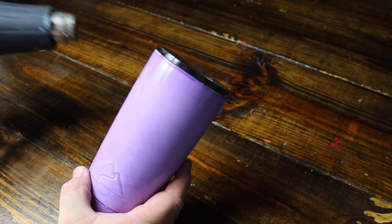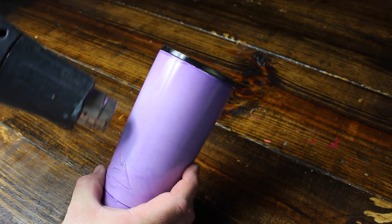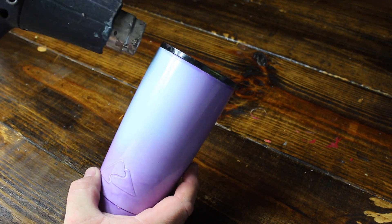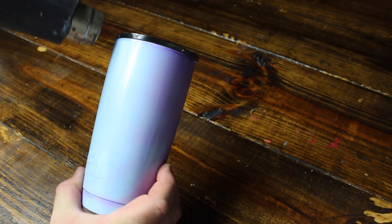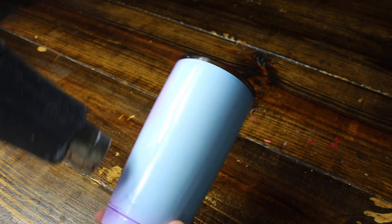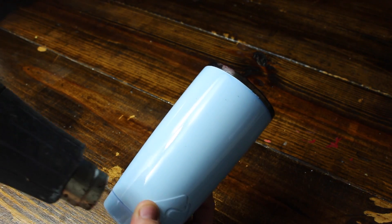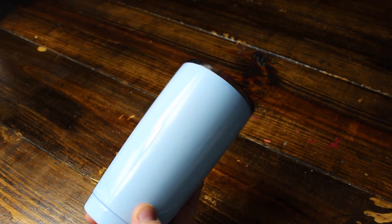Alright guys, for demonstration purposes we have the cup at room temperature and it's purple. I'm taking a heat gun here, heating it up, and it's going from purple to blue. This effect will also work when you step outside into the heat or you hold it with your hands.